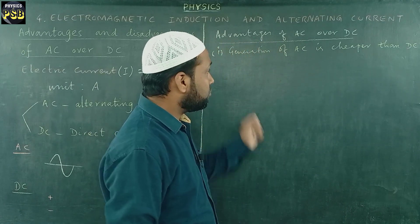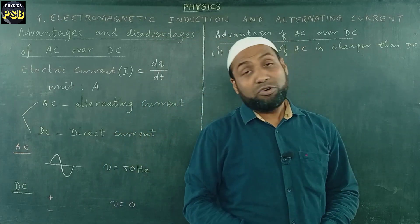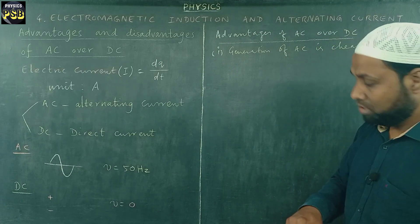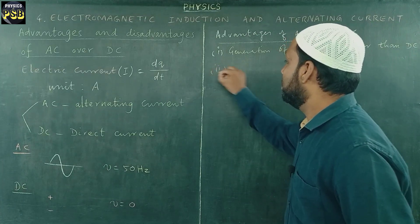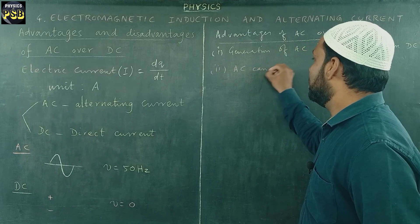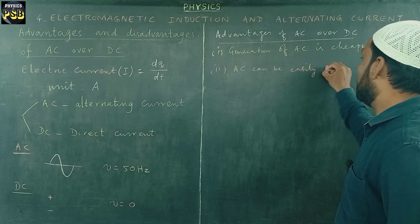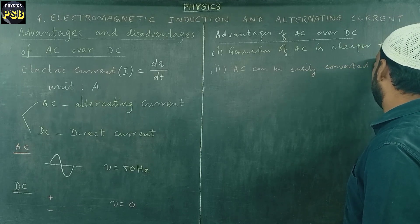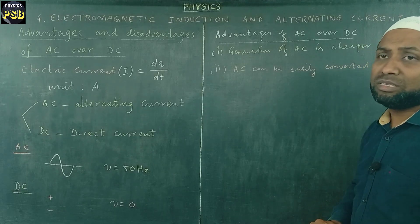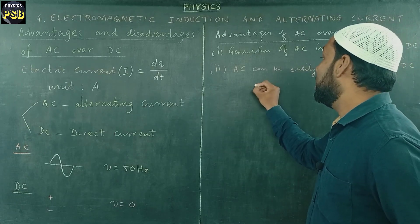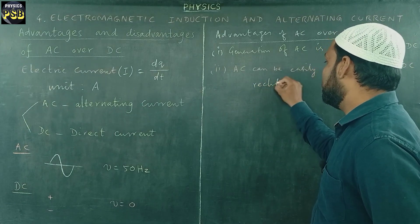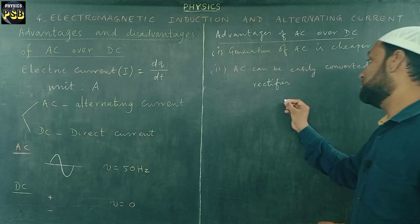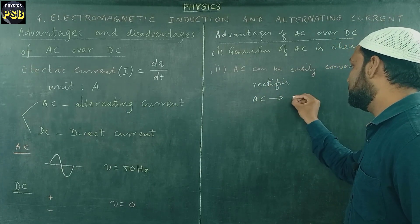Second, AC can be converted into DC with the help of rectifiers. AC can be easily converted into DC. For this purpose, a device known as rectifier is used. The work of rectifier is to change AC into DC.